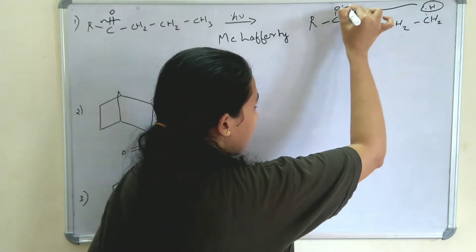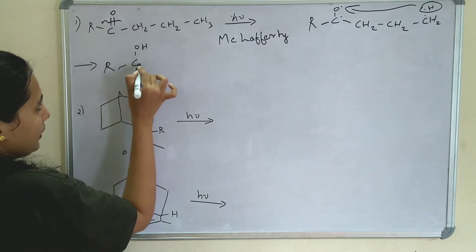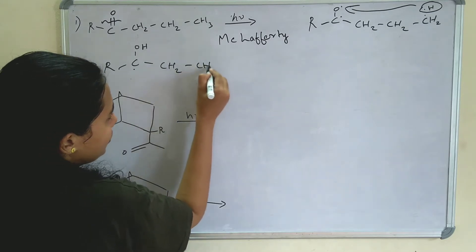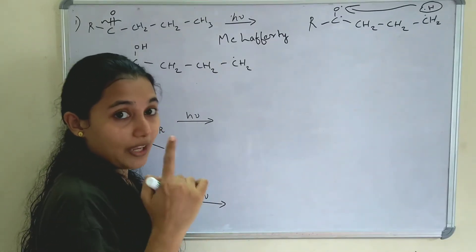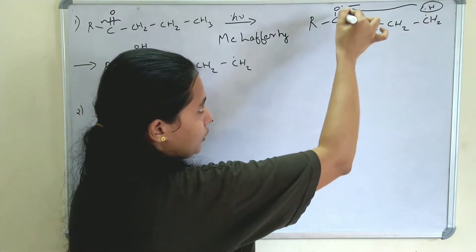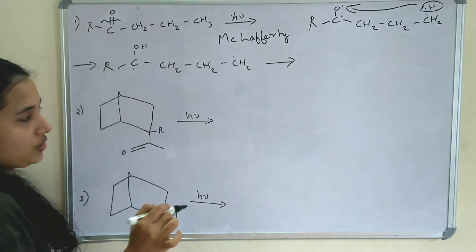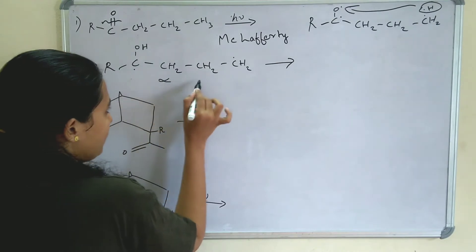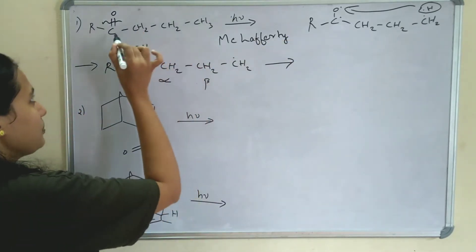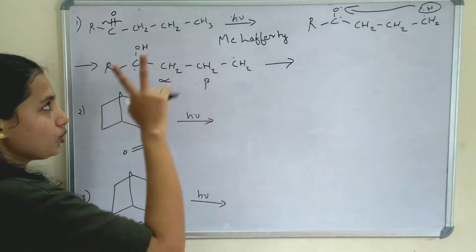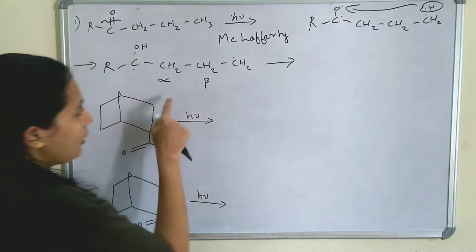This gamma hydrogen is abstracted by the oxygen. So we get R-C-OH with a radical here, and a CH2 radical. A 6-membered ring can be formed in Norrish type 2 reaction — 1, 2, 3, 4, 5, and 6. The next step is alpha-beta cleavage. This is alpha and this is beta carbon. Alpha-beta cleavage is the next step in McLafferty rearrangement. So the steps are: first, homolytic cleavage of C=O; then two oxygen radicals; then gamma hydrogen abstraction by oxygen.